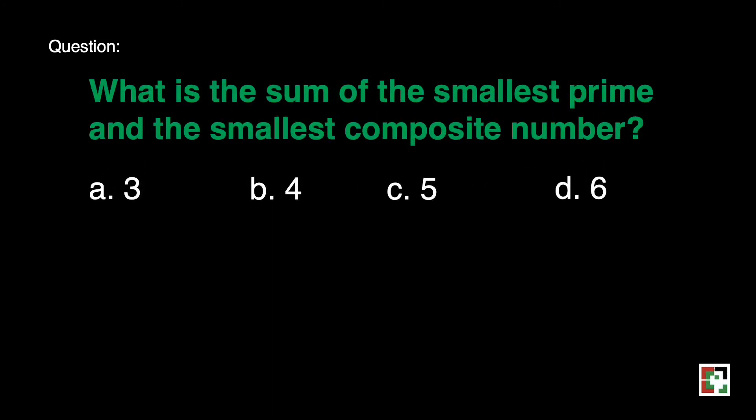What is the sum of the smallest prime number and its smallest composite number? Is it a) 3, b) 4, c) 5, d) 6?